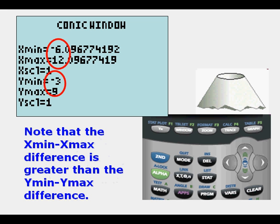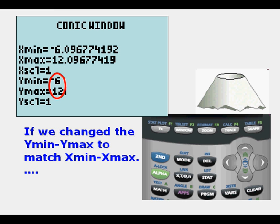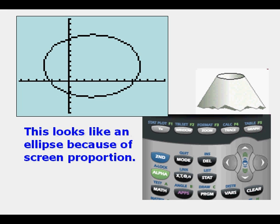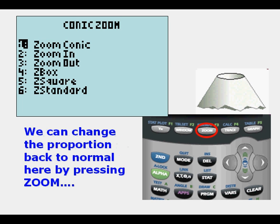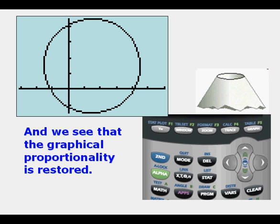Note that the Xmin Xmax difference is greater than the Ymin to Ymax difference. That adjusts for screen proportionality. If we change Ymin Ymax to match Xmin Xmax, we're going to get an elliptical shape because this will come back to the screen distortion. We can change the proportion back to normal by pressing Zoom and then Enter for Zoom Conic. That would be Zoom 1. We see that the graphical proportionality is restored.